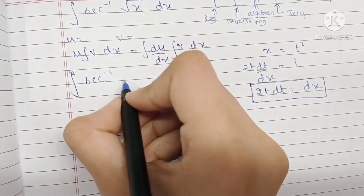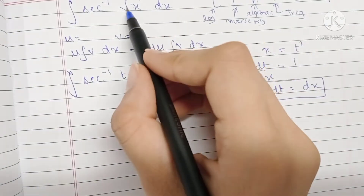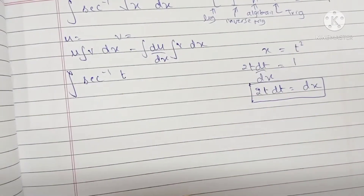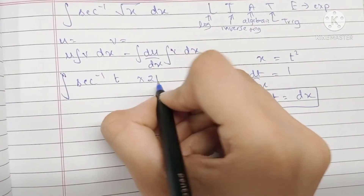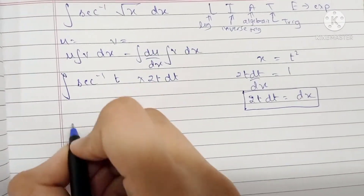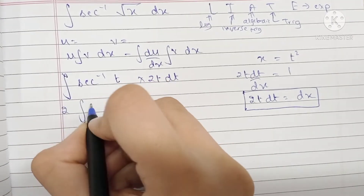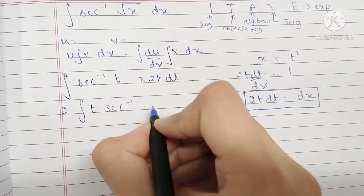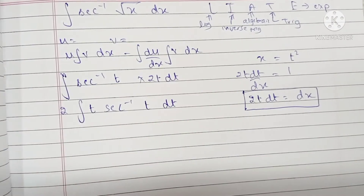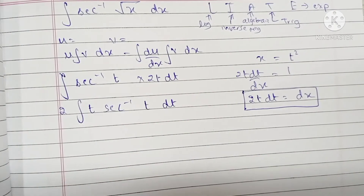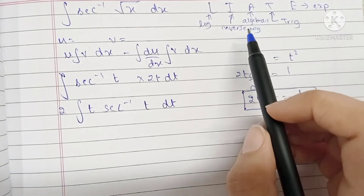So we have the integral of sec inverse of t — because x is t squared, so the root of t squared is t — multiplied by 2t dt. Taking the 2 outside as a constant, we have 2 times the integral of t·sec⁻¹(t) dt.